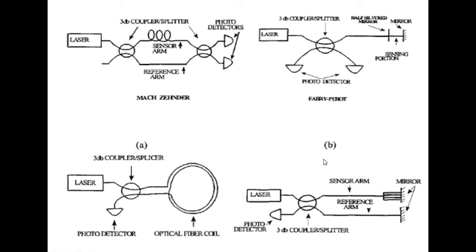Another configuration of the same type: laser source, coupler, sensing arm, striking mirror — the light returns through another cable and comes to the photo detector. Here single or two fiber optic cables are utilized and connected. The reference signal is measured at one photo diode and the modulated light source is sensed by another photo diode, which compares how much modulation has taken place. This is the phase modulation technique.